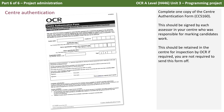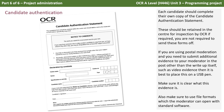You should complete one copy of the centre authentication form. This should be signed by each assessor in your centre who is responsible for marking candidates' work. This should be retained in the centre for inspection by OCR if required — you're not required to send this form off. Each candidate should also complete their own copy of the candidate authentication statement, and again these should be retained in the centre for inspection if required. You're not required to send these off either.